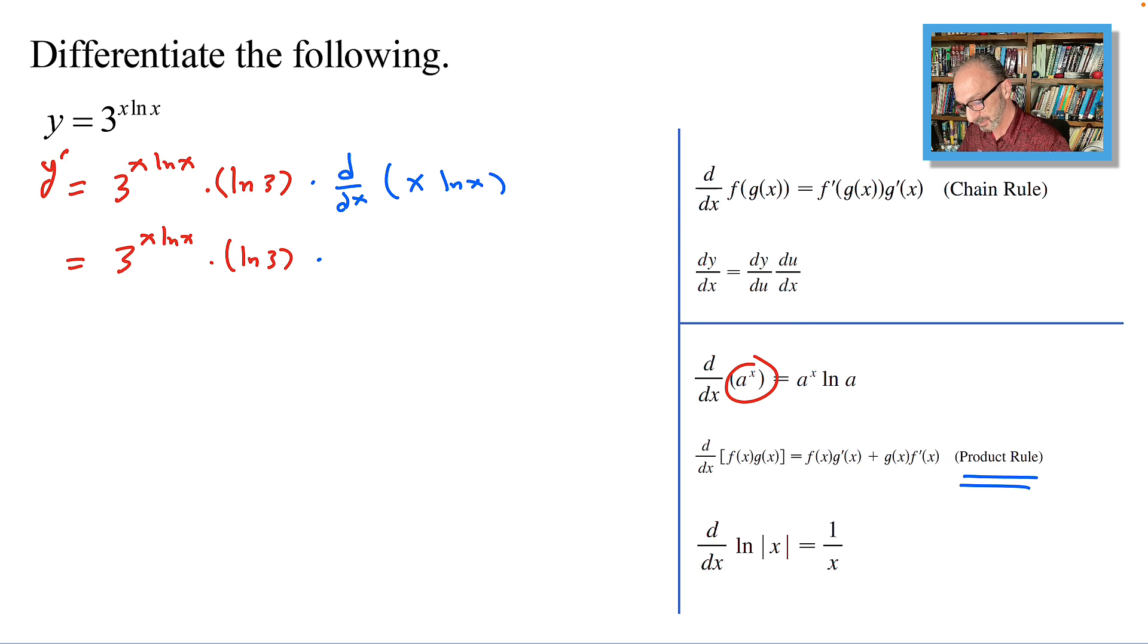Let's use parenthesis to be on the safe side. So we have x, the first, times the derivative of the second part, which is ln x. The derivative of ln x is 1 over x, plus the derivative of x is 1, and we keep ln x, so it's ln x times 1. That's just applying the product rule straight.